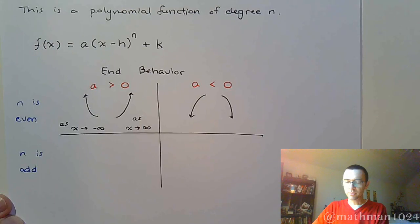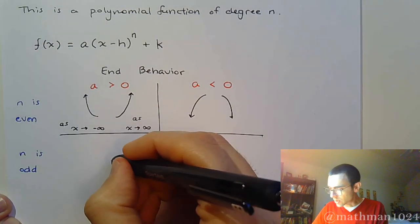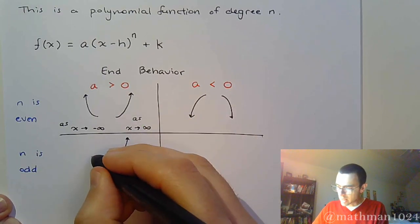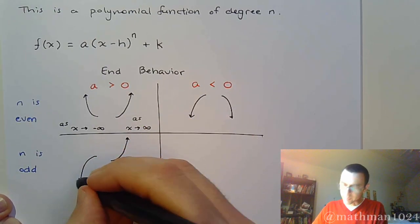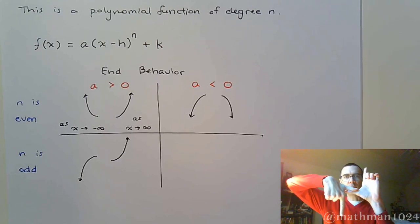When it's odd, this is when we think about, say, x to the third. And x to the third goes up on the right. And it goes down on the left. It does the cactus thing that we've talked about.